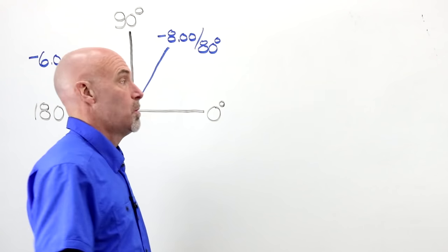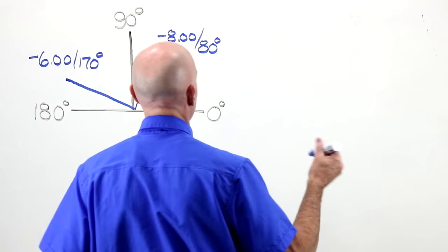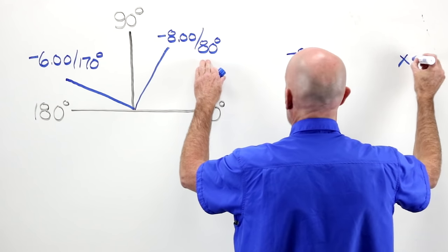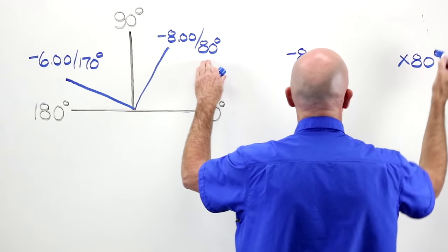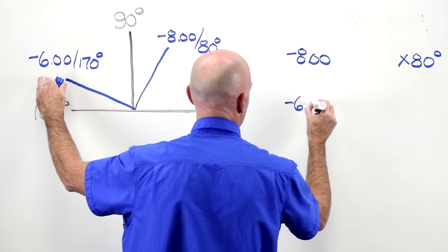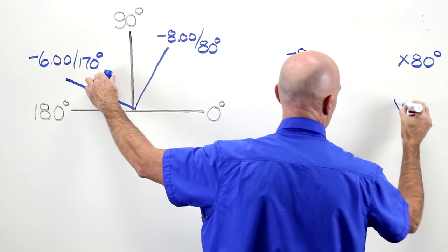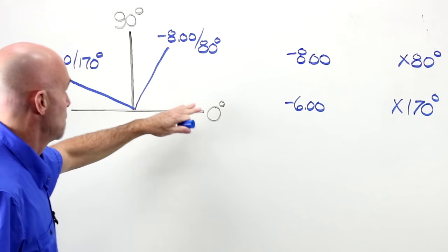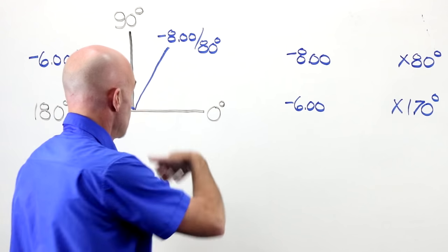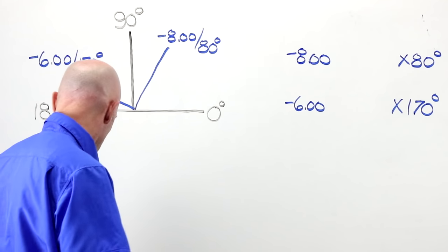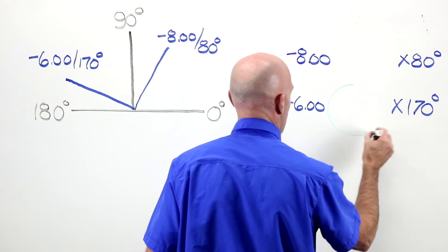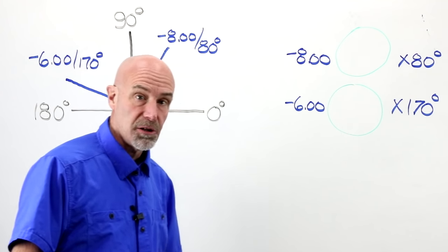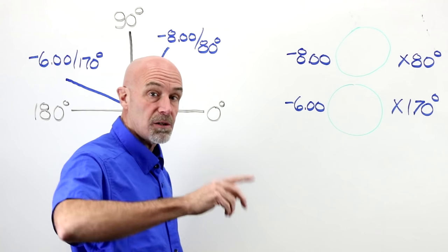As is always the case, let's start with what we know. We know we have minus eight at 80 degrees. And we know we have minus six at 170 degrees. It's right there in front of us, there's no mystery involved.